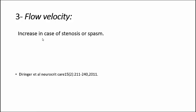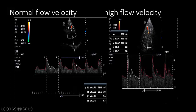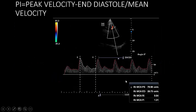Third, look for the flow velocity of the cerebral vessels. For each intracranial artery there is a specific normal velocity. If this velocity is increased, it could be either stenosis, vasospasm, or hyperdynamic circulation — we'll discuss how to differentiate between these. This is a normal flow of the middle cerebral artery, and this is an increased flow velocity. Normally the middle cerebral artery velocity is maximum 120 cm/s; in this patient it is 170 cm/s.